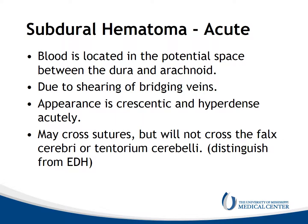Acute subdural hematomas are another type of hemorrhage. This blood is located in the potential space between the dura and the arachnoid. It's due to shearing of the bridging veins, and these appear crescent-shaped and hyperdense acutely on CT. They may cross the sutures, but they will not cross the falx cerebri or tentorium. This helps distinguish these from epidural hematomas.